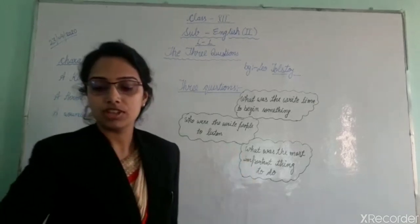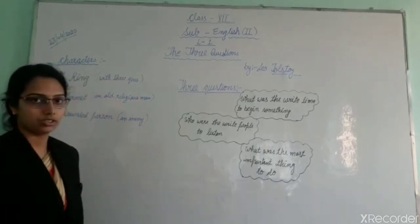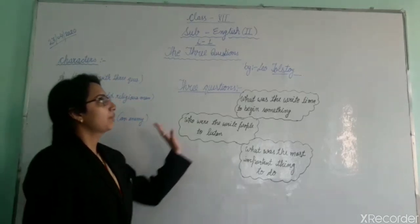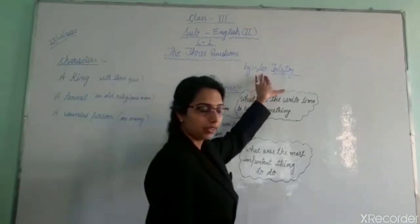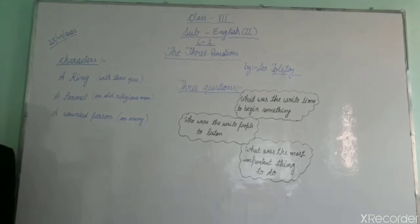The first chapter of this book is The Three Questions, a short story written by Leo Tolstoy. Leo Tolstoy is a Russian writer, one of the most famous writers and is known for his novel War and Peace.